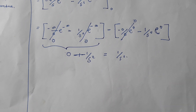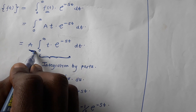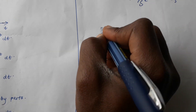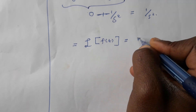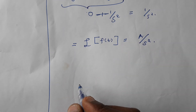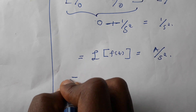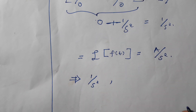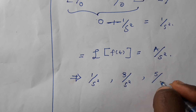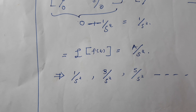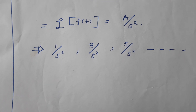Therefore, the Laplace transform of the ramp function f(t) = at is a over s². For a unit ramp (a = 1), the Laplace transform is 1 over s². For a ramp with slope 3, it is 3 over s². For slope 5, it is 5 over s², and so forth. So whichever value of a you are given, that is how you obtain the Laplace transform of the ramp input.